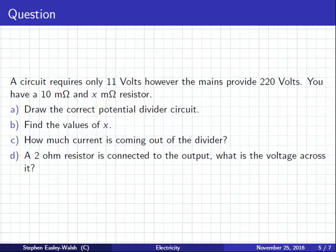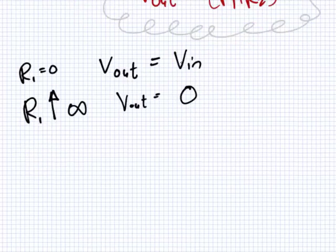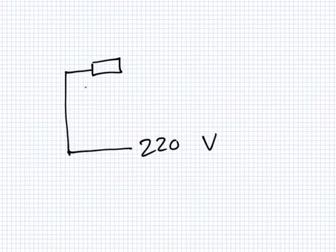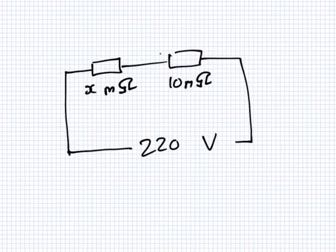Here's an example. A circuit requires only 11 volts. However, the mains provide 220 volts. You have two resistors, 10 milliohms and X milliohms. And of course the X is the one that you can change. Draw the potential divider. Okay, so let's just do that first together. Right, so what's the voltage coming in to the house? The V_in. It's 220 volts. And then this here is X milliohms. And this one here is 10 milliohms, was it? And what voltage do I want here? I want 11 volts. That's the circuit. Part A is done.